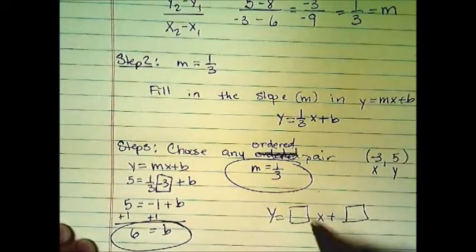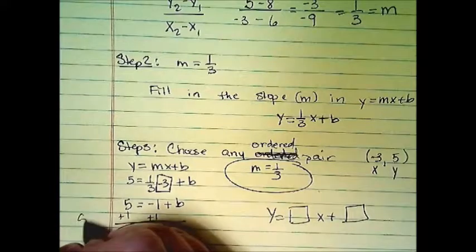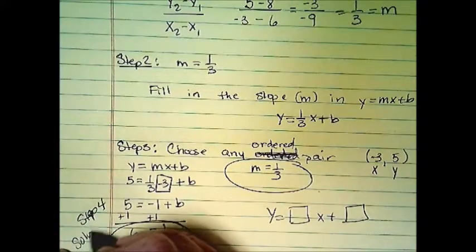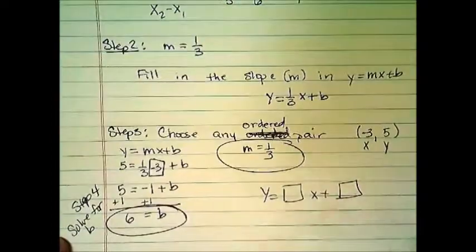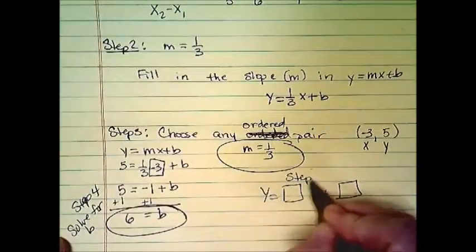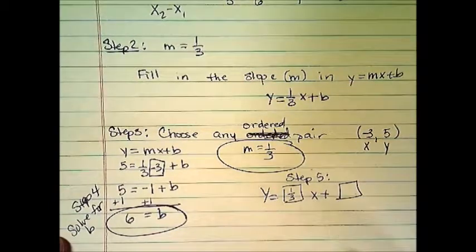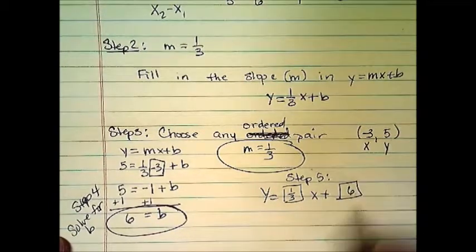So I'm ready to finish here. Step 4 was solve for b. I did that. Step 5 is put this in here. Negative. No, it's not negative. It's positive 1 third plus 6.